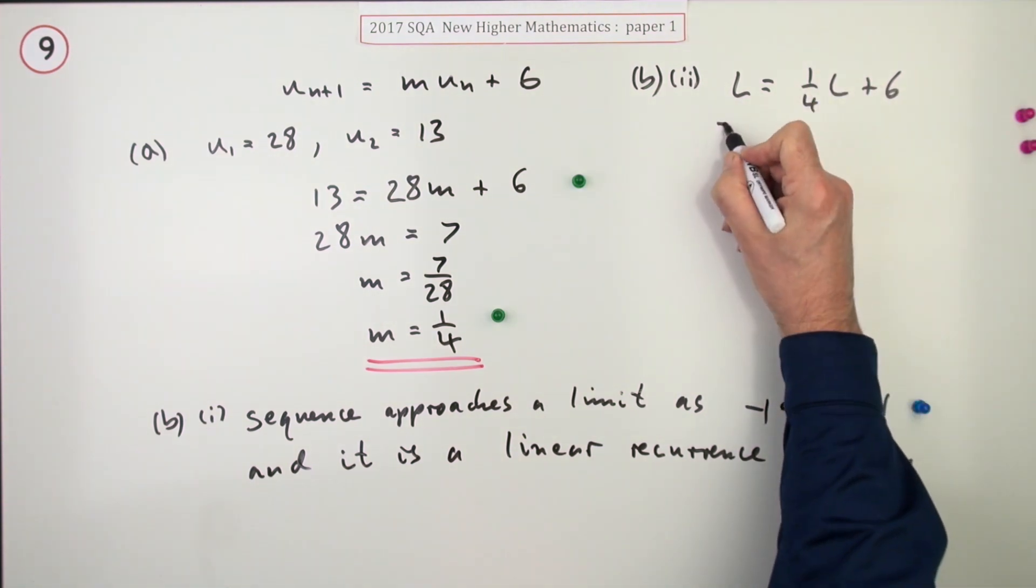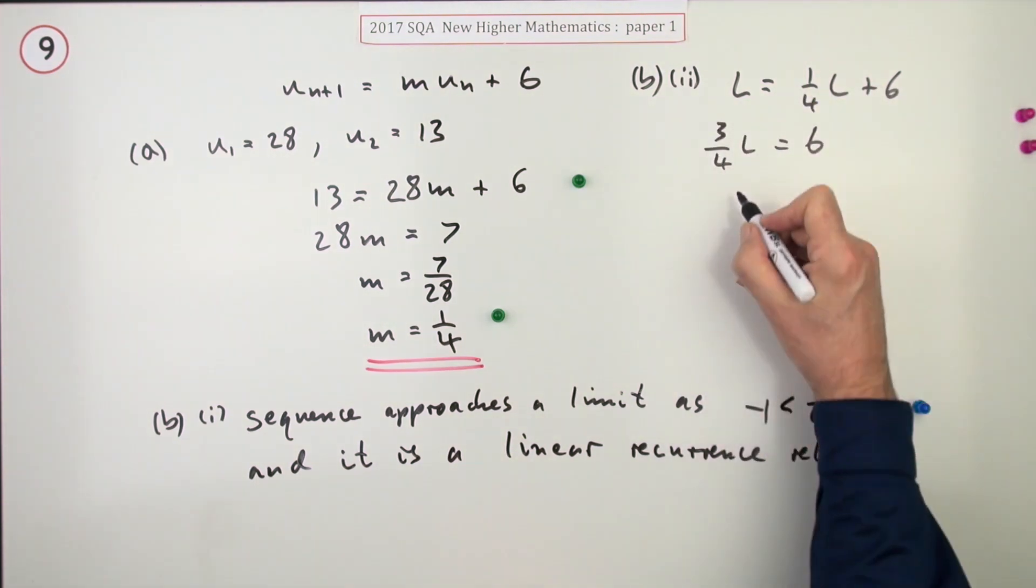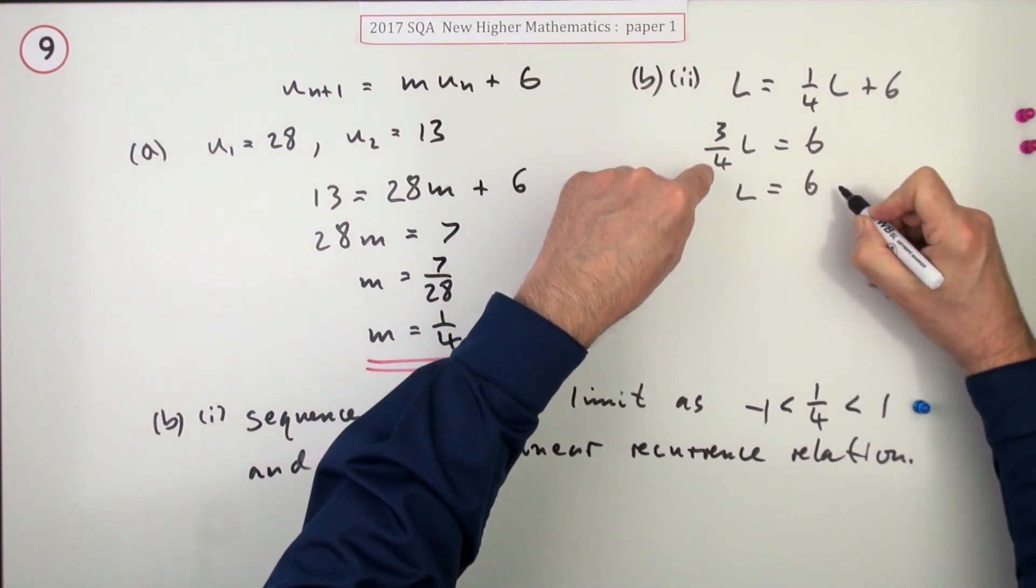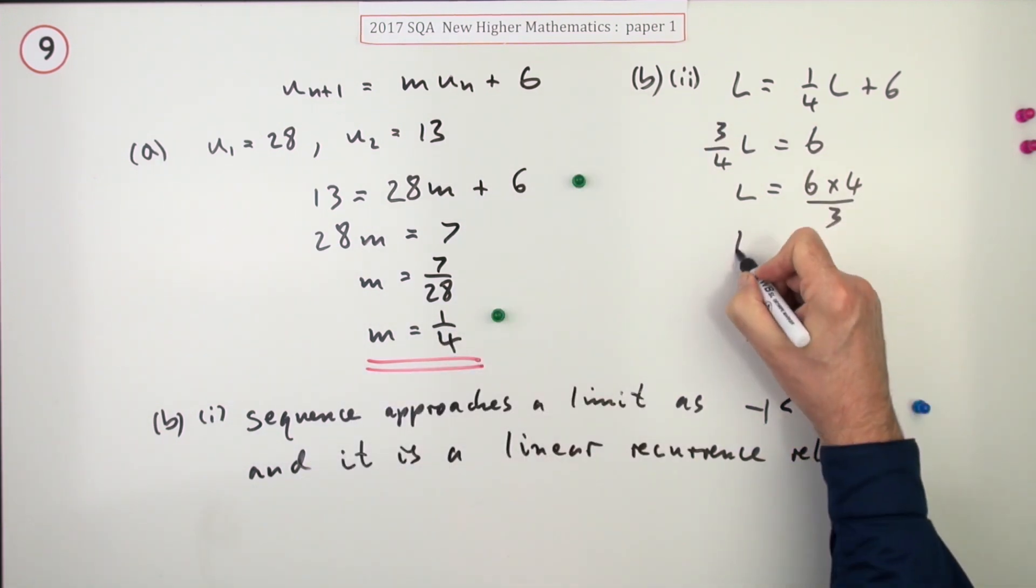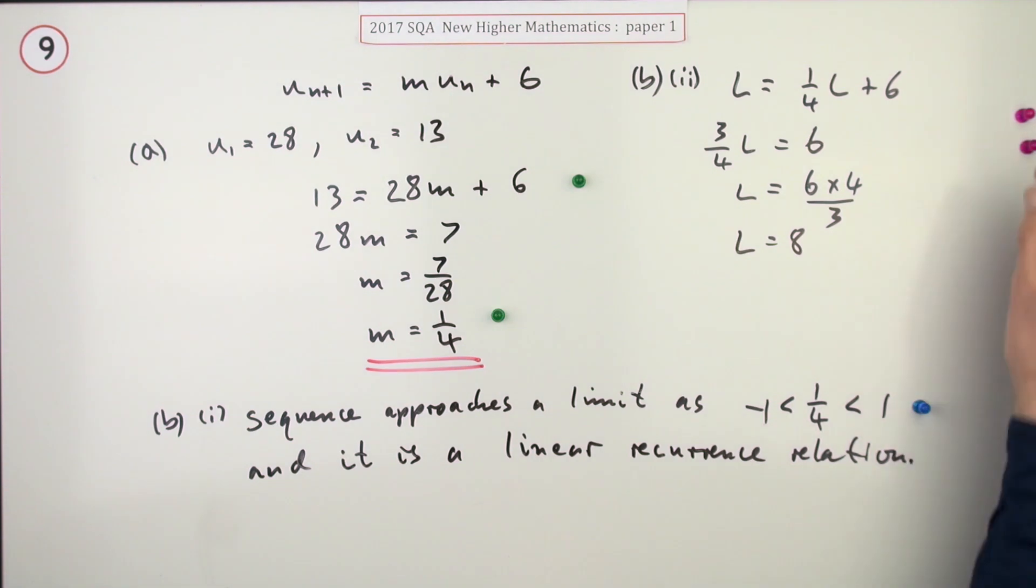Now, taking that across, that means you've only got 3 quarters of L equals 6. So L is going to be, and then instead of dividing by 3 quarters, do the parts separately. So at 6, the dividing 4 multiplies, the multiplying 3 divides. There you go. 3 into 6 equals 2. 2 times 4 is 8 again. So putting down the meaning of the limit gives you one mark. Evaluating it gives you the second.